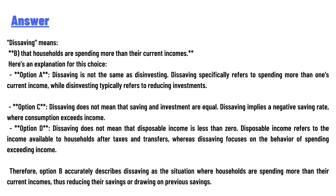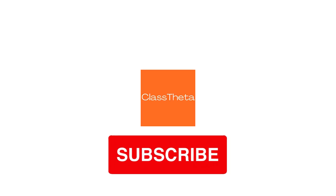Dissaving focuses on the behavior of spending exceeding income. Therefore, option A accurately describes dissaving as a situation where households are spending more than their current income, reducing their savings or drawing on previous savings.